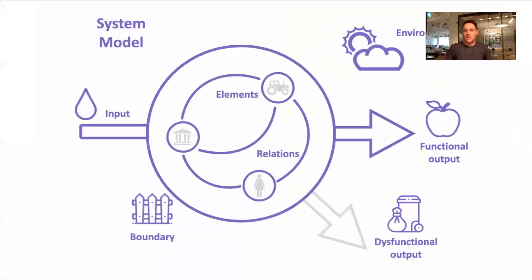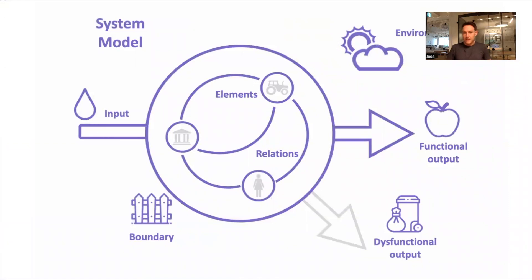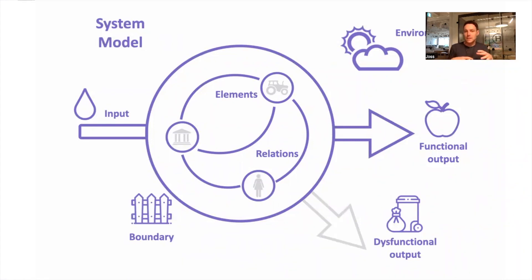Those are systems, and this is the model we use to represent them. There are the elements in the center, and the interrelationships between them. Then there's a boundary around that — it can be quite open or more closed and well defined — but ultimately there is some limit to the system. The system takes in inputs and processes them in some way to perform a functional output, which is the function of the system. But there's always some inefficiency or dysfunctionality, and thus the system will create waste or entropy that is also outputted.